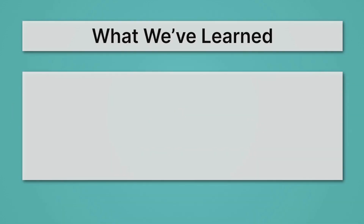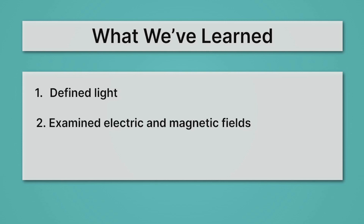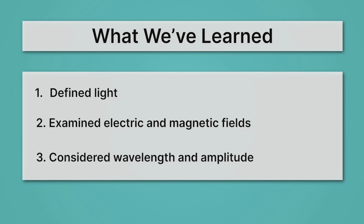Let's review what we've learned. First, we defined light — it's an oscillating wave of electromagnetic fields, where the electric and magnetic fields get stronger and weaker, stronger and weaker, and that's just what light is. Then we examined electric and magnetic fields so we could make sense of that definition. And lastly, we considered wavelength and amplitude. We saw that wavelength, as well as frequency, determines the color of light, and amplitude determines brightness.